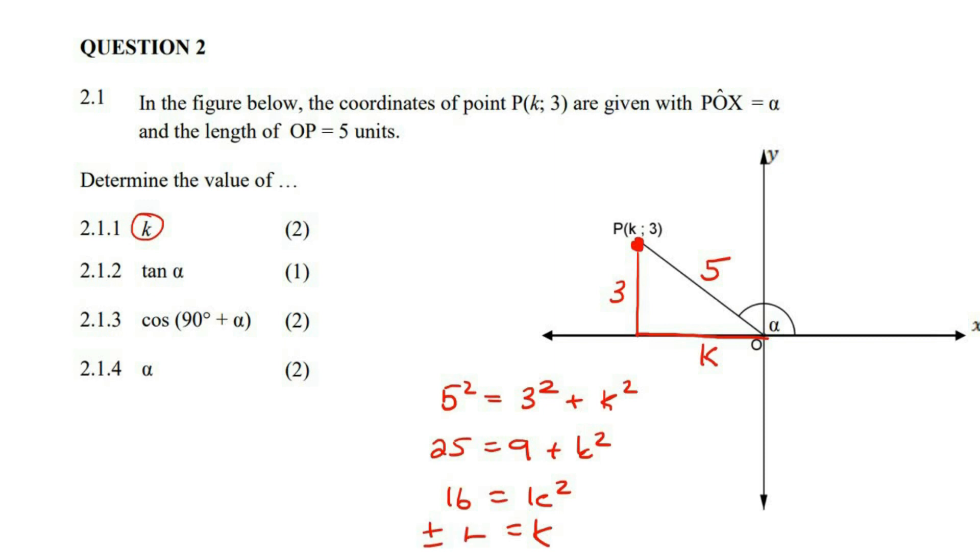But k cannot be a positive value, because we know that here, this k is a negative value, because it's a negative x value. So k is negative 4.